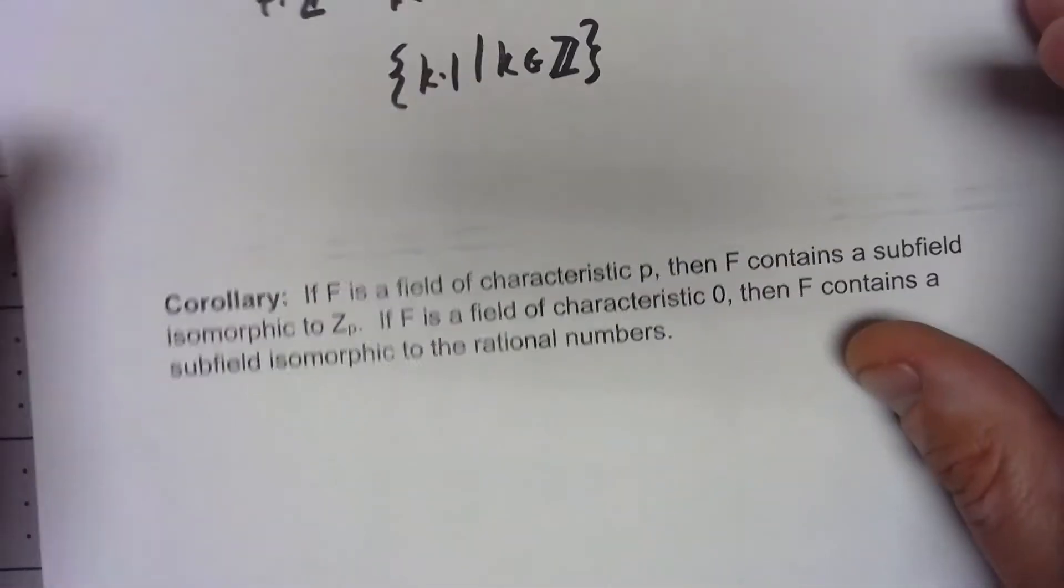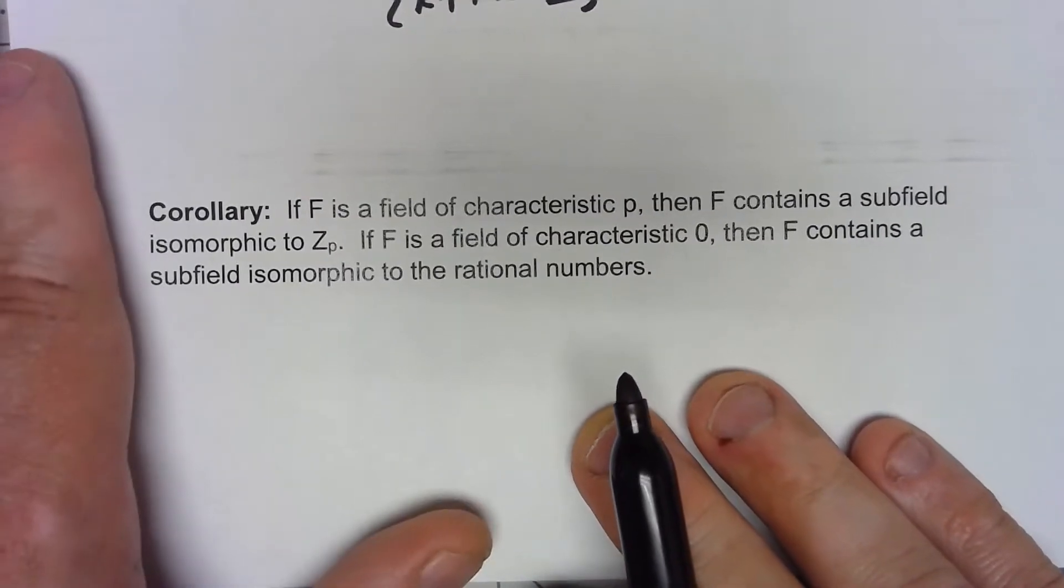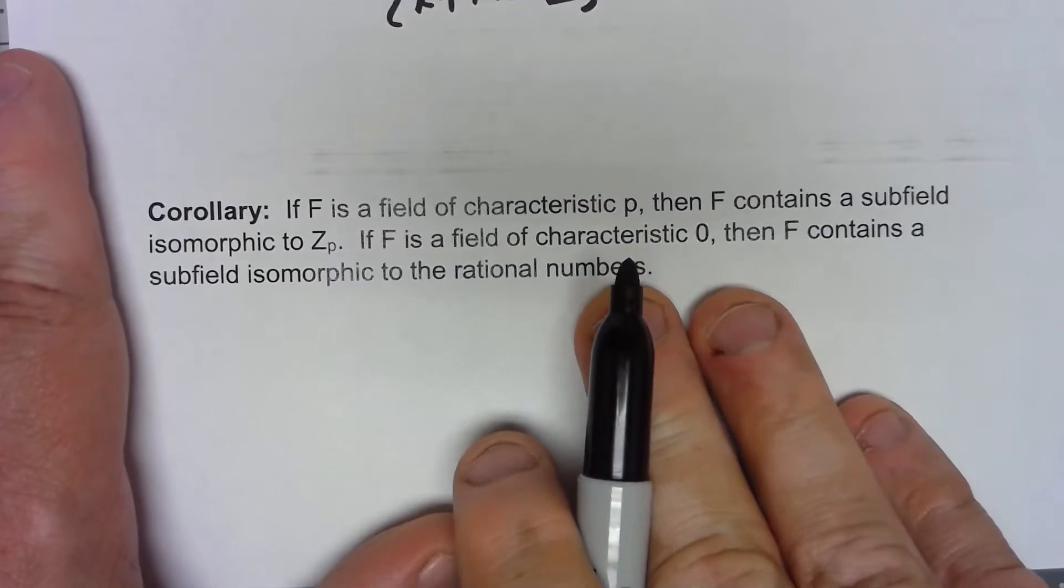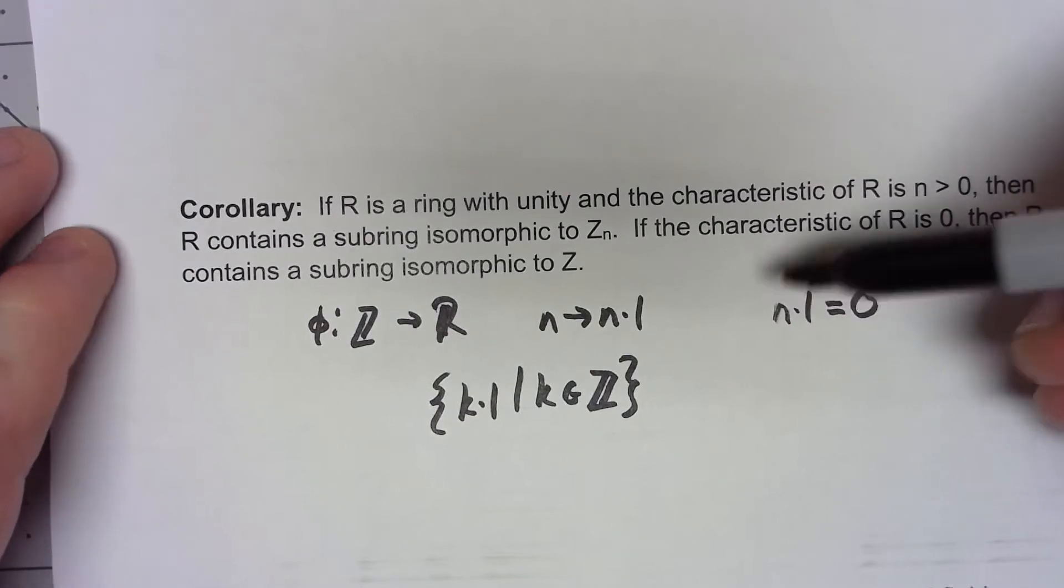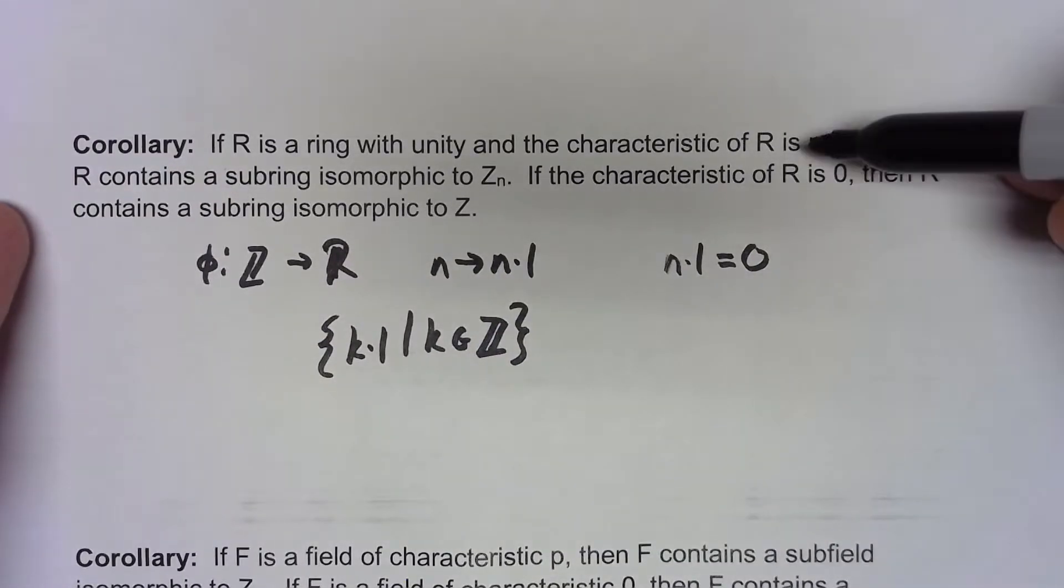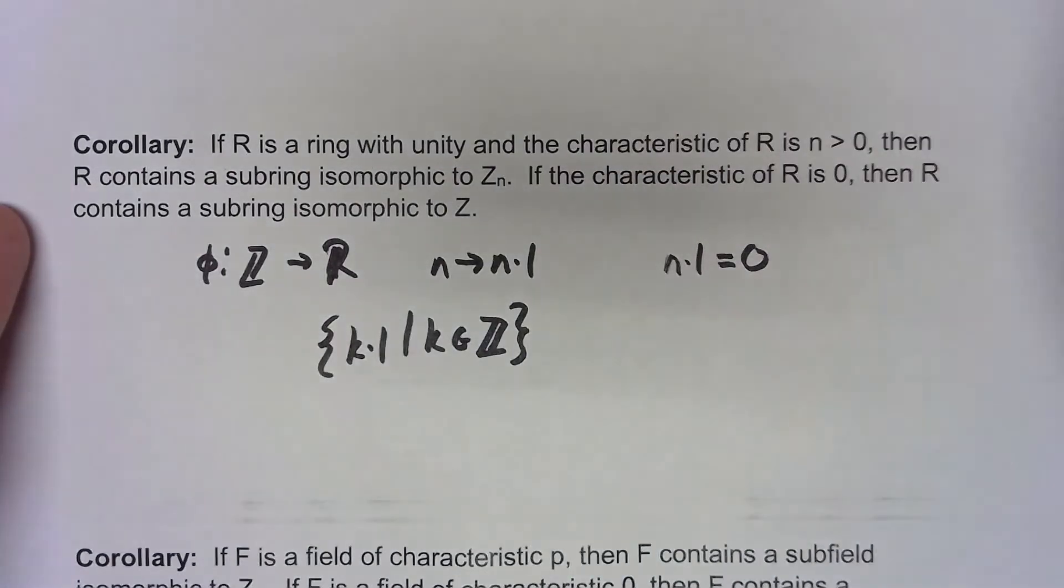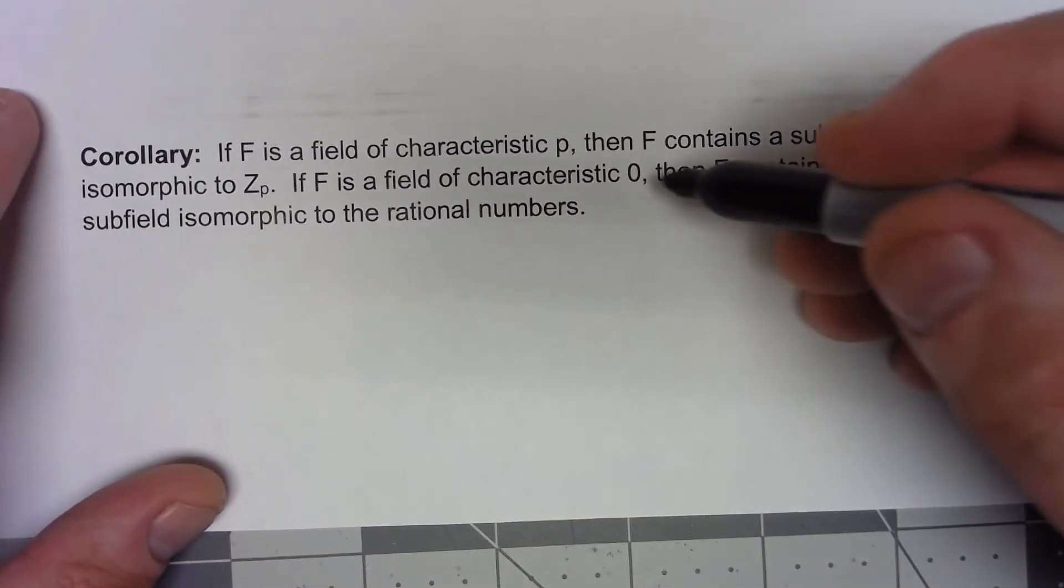We can take that even further. If we start with a field of characteristic p, then F contains a subfield isomorphic to Zp. Well, that's just an application of this previous corollary. If the characteristic is p, it has to have a subring isomorphic to Zp. And of course, Zp is a field, so it's a subfield that's going to be isomorphic. Easy.